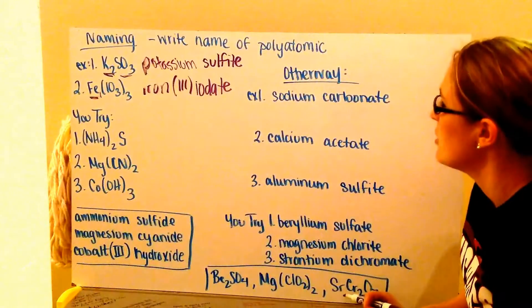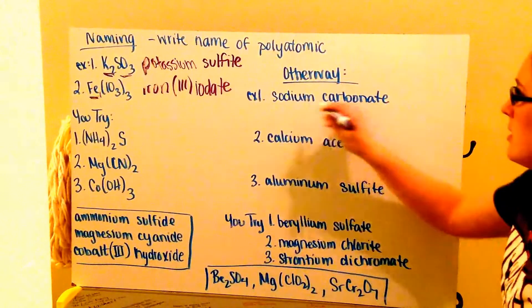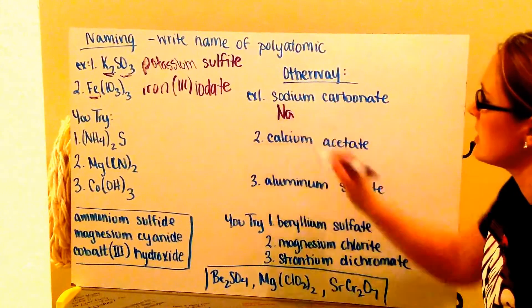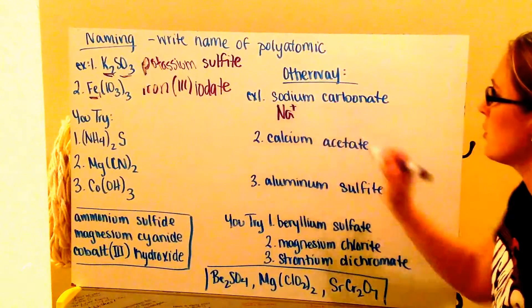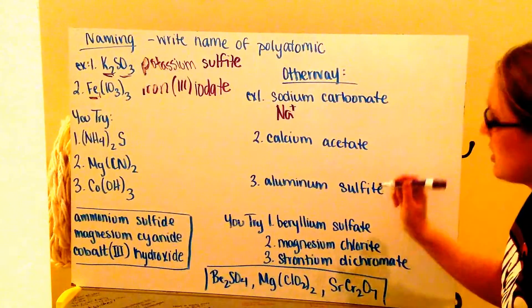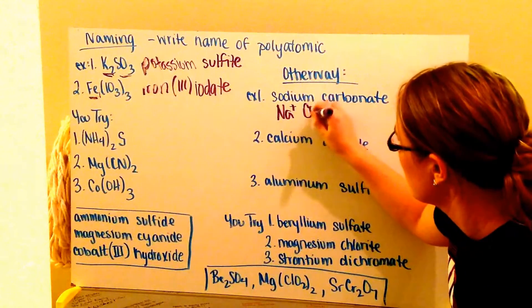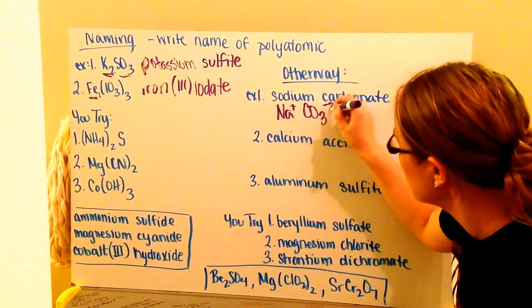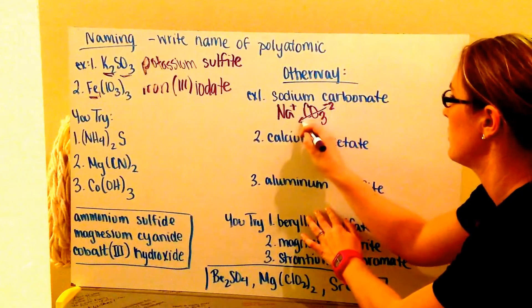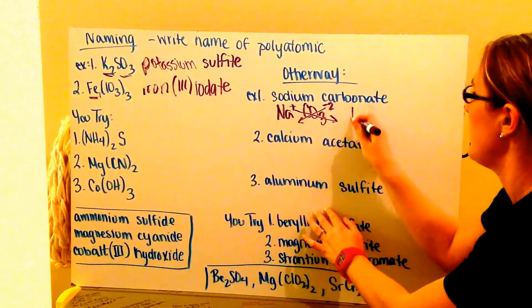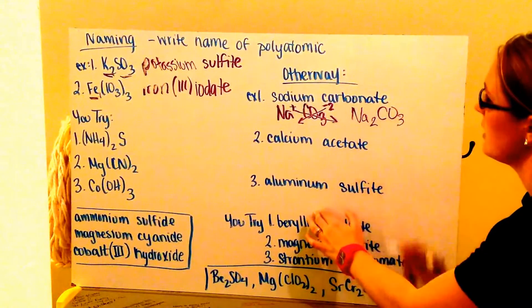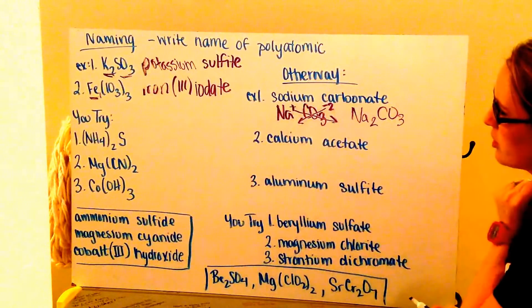Let's go ahead and go the other direction. Sodium carbonate. Sodium is my atom. So I write Na. And I know that sodium has a positive one charge because it's in group one. Then I go ahead and locate carbonate on my polyatomic ion sheet. Carbonate is CO3 minus two. So next I go ahead and crisscross my charges. And I write Na2CO3. And I just have one carbonate because of my positive one charge of my sodium.